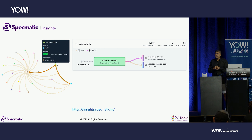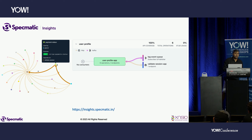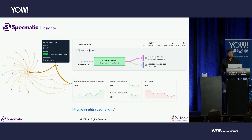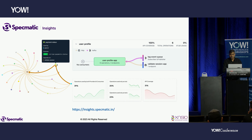You can also see overall API coverage across all your projects, and how many specs are in the central repo versus floating around in emails. You get real-time dashboards to visualize your current contract-driven development (CDD) adoption across the company. Visit insights.specmatic.in to play around with examples.